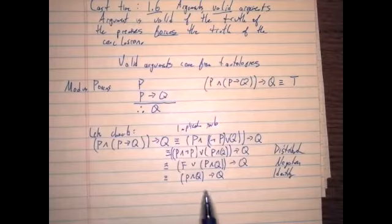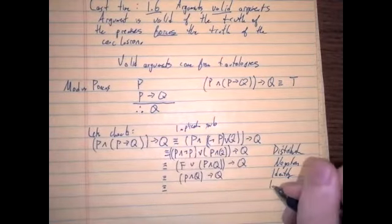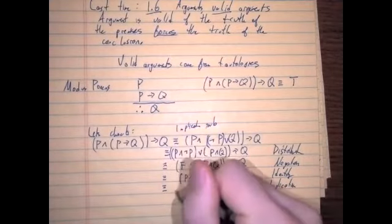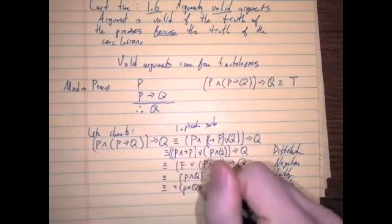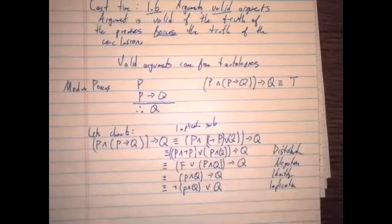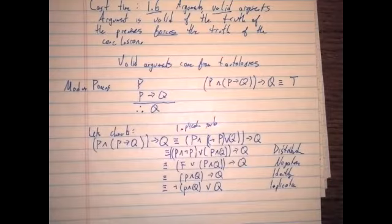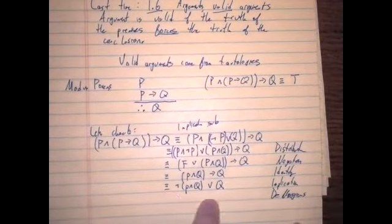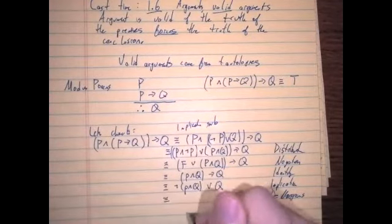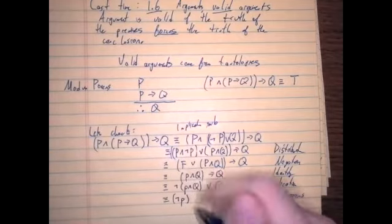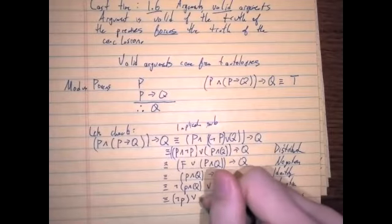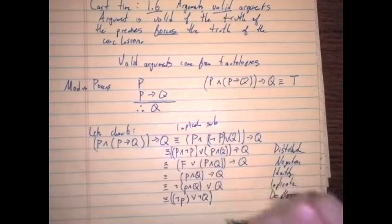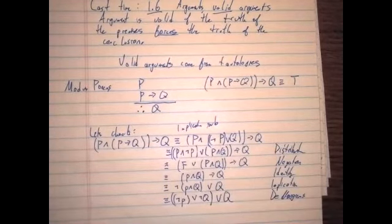Now I can get rid of this implication using an implication substitution again. So I get the negation of (p and q) or q. What do I do next? DeMorgan's — yes, very good. DeMorgan's allows me to distribute negations through compound propositions. So this is equivalent to (not p or not q) or q.